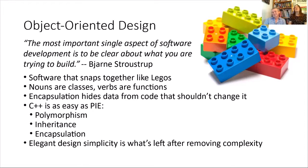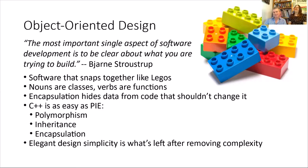Object-oriented design: as Bjarne Stroustrup said, 'The most important single aspect of software development is to be clear about what you're trying to build.' Software should snap together like Legos. Nouns are classes, verbs are functions. Encapsulation hides data from code that shouldn't change it. C++ embodies polymorphism, inheritance, and encapsulation. Elegant design simplicity is what's left after removing complexity — and the reason C++ is complex is to remove complexity, not to add it.